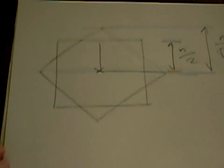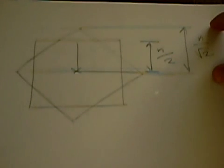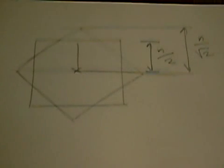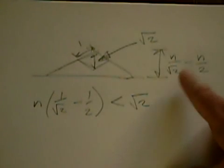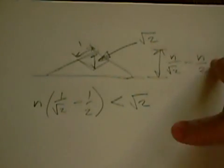Imagine an n by n by n cube. And now imagine what happens when we turn one of the faces 45 degrees. Then, this distance here is n over the square root of 2, and this is n over 2. So the difference between these two distances comes out to n over root 2 minus n over 2.